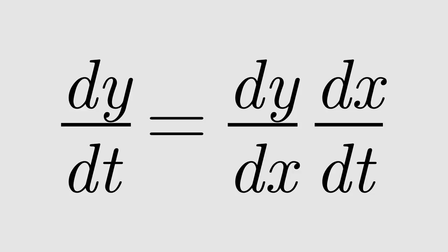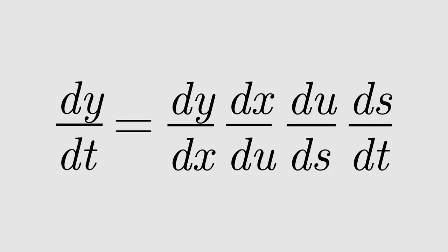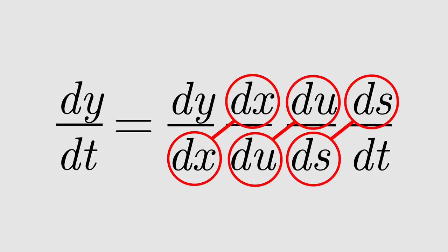If there are more dependencies, the chain rule has more terms. Some people claim it's called the chain rule because these terms are chained together, but this explanation seems a bit simplistic to me.